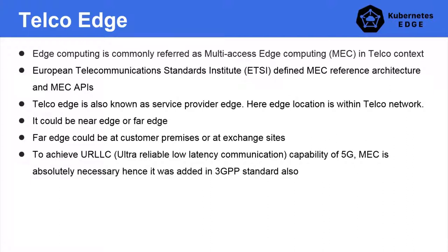Telco edge is primarily within the control of telcos, and it could be near edge or far edge. Near edge is close to the telco's core data center, while far edge is the opposite — it could be as far as the customer premises itself. MEC is related to 5G; in fact, MEC is going to be an absolutely necessary component for achieving 5G's URLLC capability — Ultra-Reliable Low-Latency Communication. 5G has three main capabilities: URLLC, eMBB (Enhanced Mobile Broadband), and mMTC (Massive Machine Type Communication).